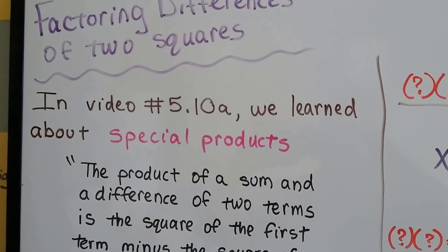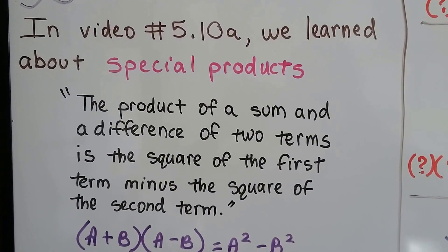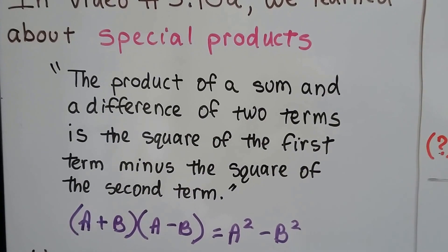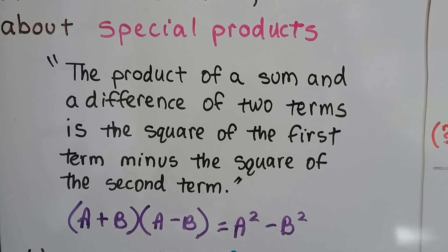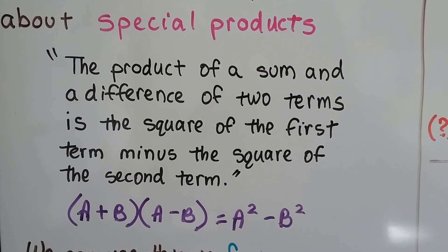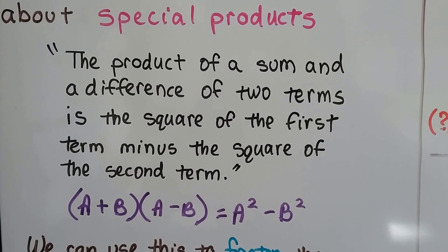In video 5.10a, we learned about special products. The product of a sum and a difference of two terms is the square of the first term minus the square of the second term.